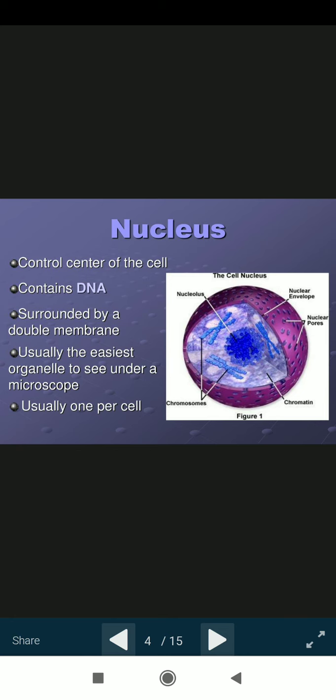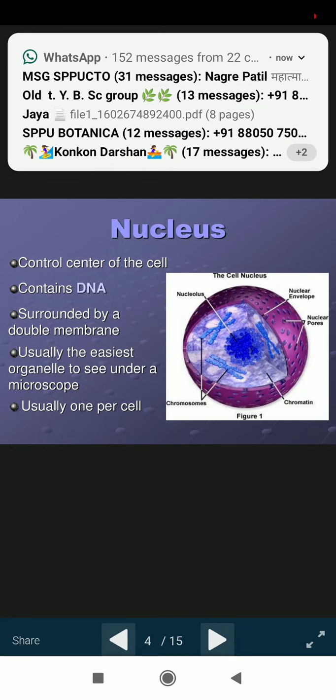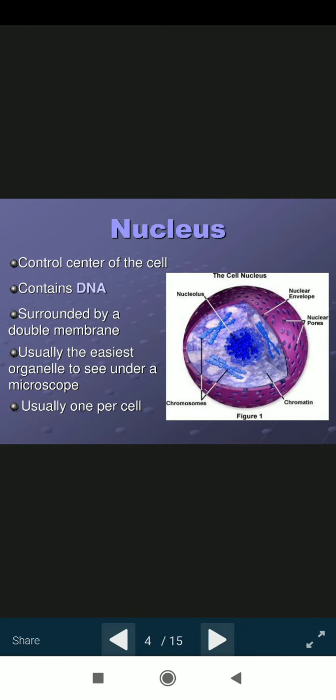The next important cell organelle is nucleus. It is the central or the controlling unit of the cell. It contains DNA. The chromosomes and DNAs are found in the nucleus of the cell, surrounded by double membrane. To see under a microscope, usually one nucleus present in a cell.